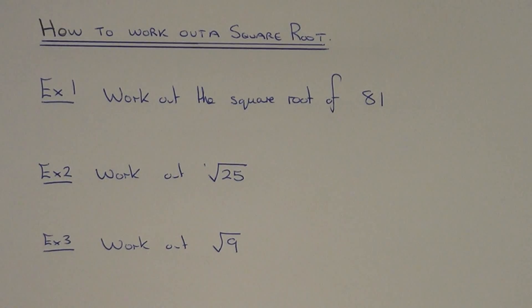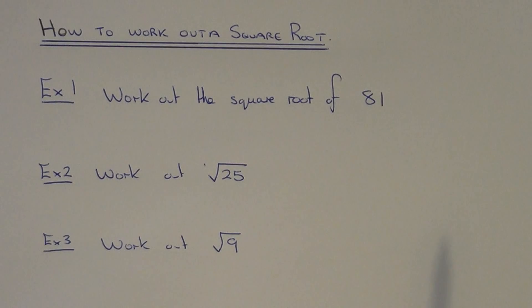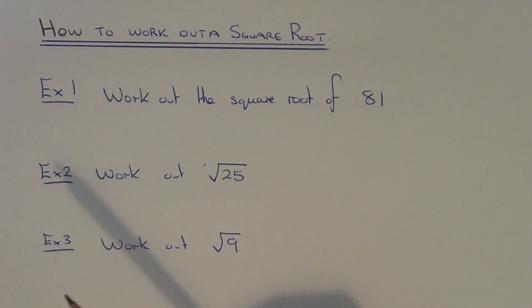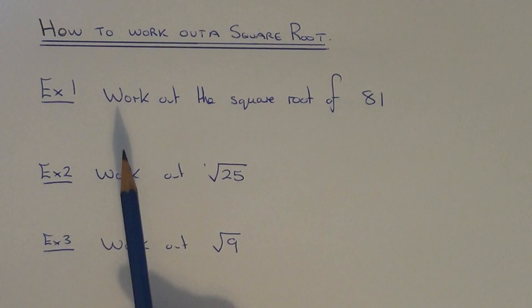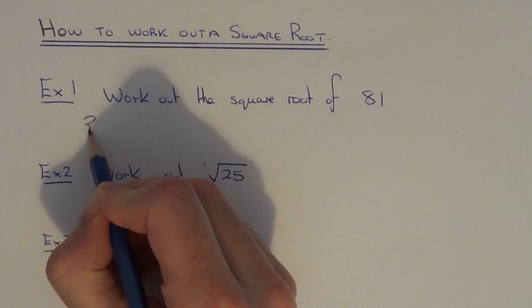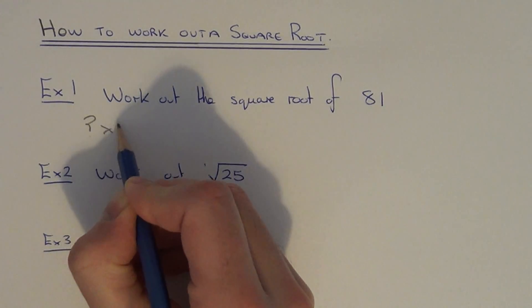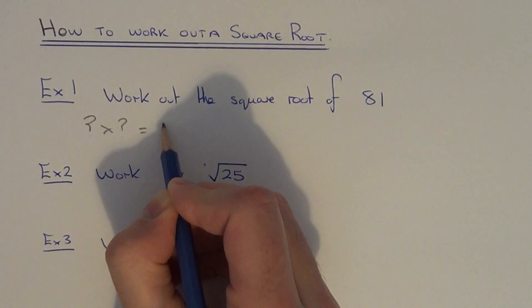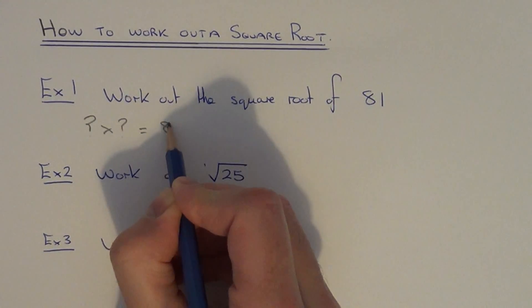To work out the square root of a number, you need to think of a number when multiplied by itself which gives you the number that you're square rooting. So let's have a look at example one. We need to work out the square root of 81, so we need to think of something times something that gives us 81.